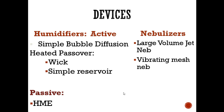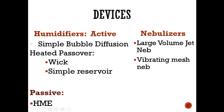Looking at humidity devices: active humidifiers include the simple bubble diffusion device — the bubbler — and the heated passover humidifier, which has two examples you'll learn: the wick and the simple reservoir. There is one passive humidifier — the HME. For nebulizers or aerosol-delivering devices, we focus on the large-volume jet neb and the vibrating mesh neb. For boards, focus primarily on the heated passover wick or simple reservoir, the bubbler, and the large-volume jet neb.